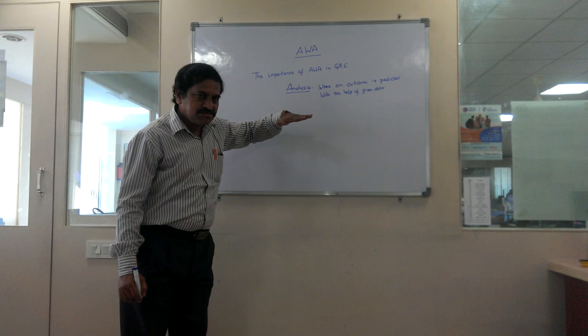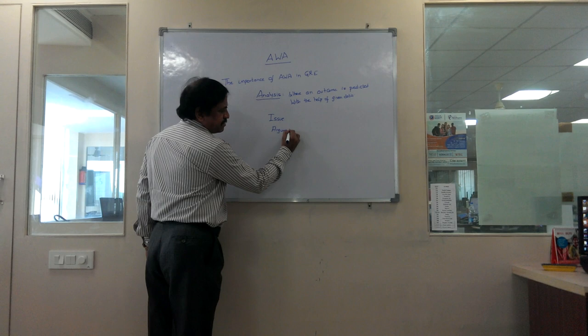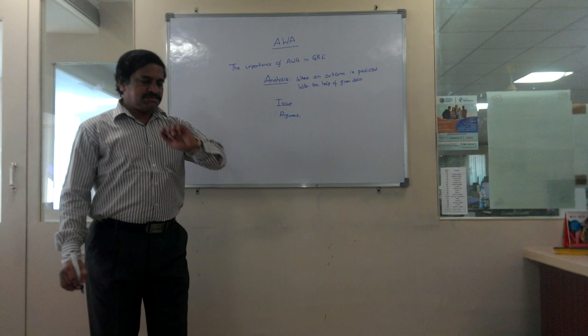The analytical writing assessment is the first module and it contains two sessions. One is called the issue task and the other is called the argument task. We have one argument task, where the issue task is the first part of your GRE examination.